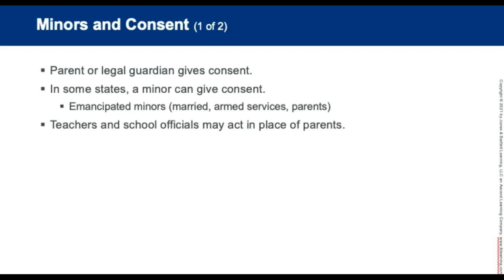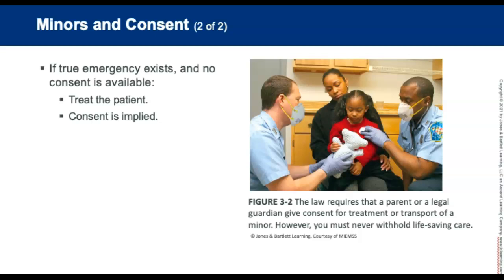When it comes to minors, the parent or legal guardian usually gives consent. In some states, a minor can give consent in the following cases: an emancipated minor is a person who is under the legal age in a given state but is legally considered an adult due to other circumstances, such as being married, a member of the armed services, or a parent themselves. School teachers and school officials may act in place of parents and provide consent for treatment to injuries that occur in a school or camp setting. If a true emergency exists and no consent is available, consent to treat the minor is implied, just as it is with an adult.